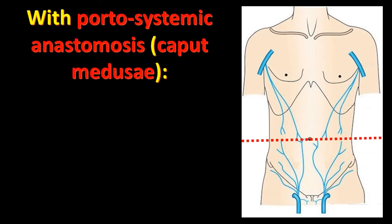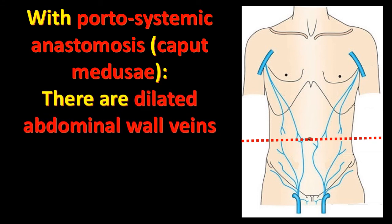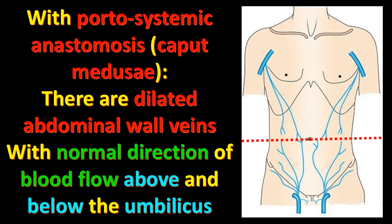In patients having portosystemic anastomosis — caput medusae, or portal hypertension — there are dilated abdominal veins, but with normal direction of blood flow both above and below the umbilicus. Above the umbilicus the blood is drained upward, and below the umbilicus the blood is drained downward — both green arrows indicating normal direction — but the veins are dilated.